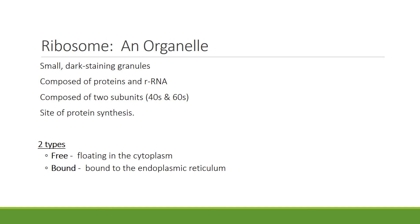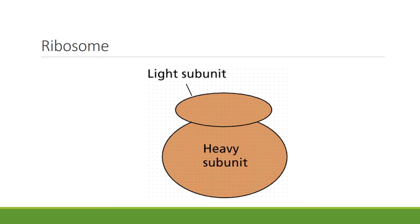There are two types of ribosomes. Some ribosomes float free in the cytoplasm, and they are said to be free ribosomes. Some are bound to the endoplasmic reticulum, and they are known as bound ribosomes. This is a drawing of a ribosome. It shows you the two subunits, the 40S or light subunit and the 60S or heavy subunit. You can see its snowman appearance.